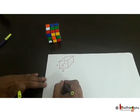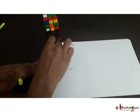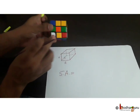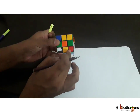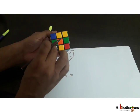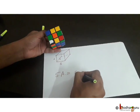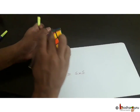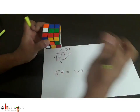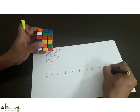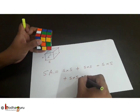So what will be its surface area? Let's find the area of each of the faces. This face has the area of S × S — it's a square, and the area of a square is S × S. So the first face has area S × S, the second face also has area S × S, the third face also S × S, and the fourth face also S × S.